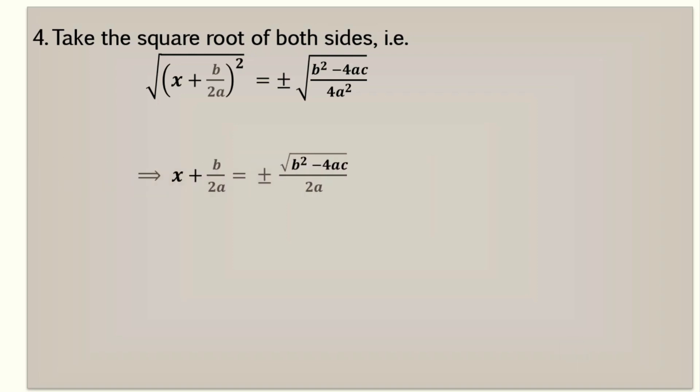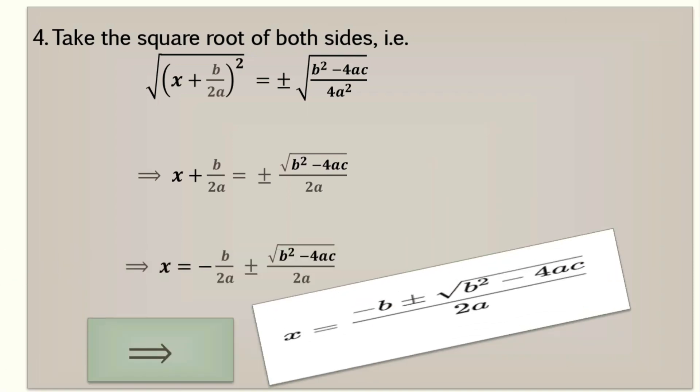And we get x plus b by 2a is equal to plus minus under the radical sign b square minus 4ac divided by 2a. And after simplifying we get the quadratic formula.